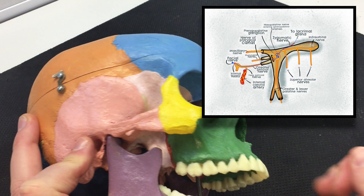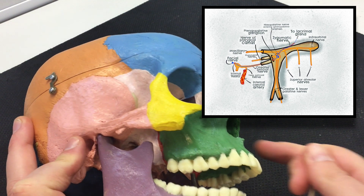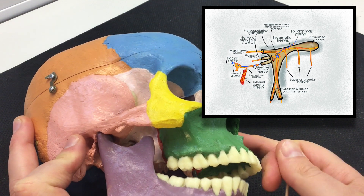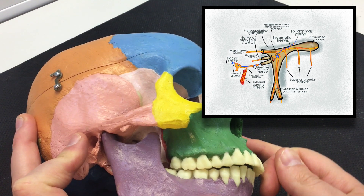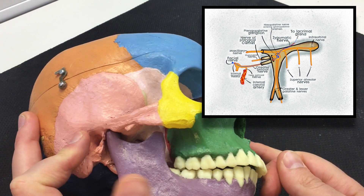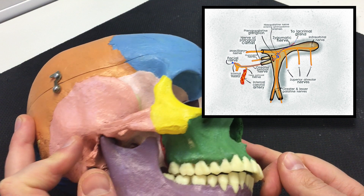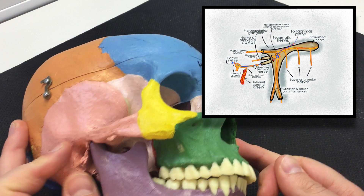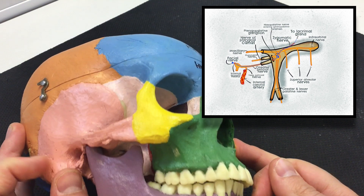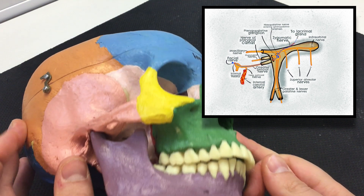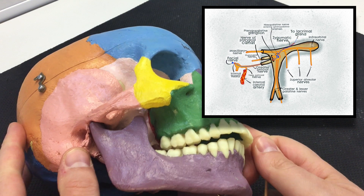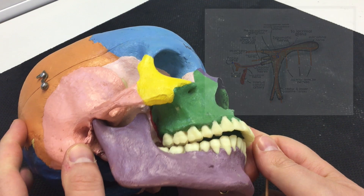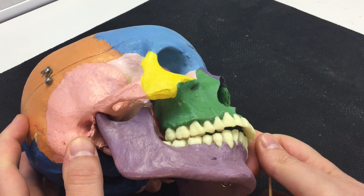The post-ganglionic fibres leave and are destined for the oral cavity, the nasal cavity, and also the lacrimal gland. We can also see that there are sympathetics that run through that space, as well as a number of blood vessels.